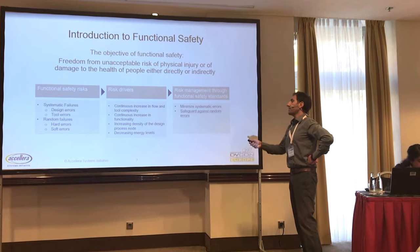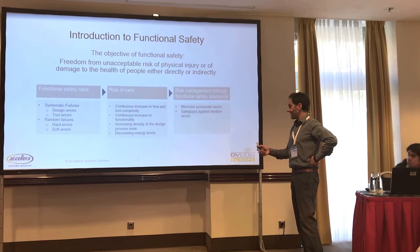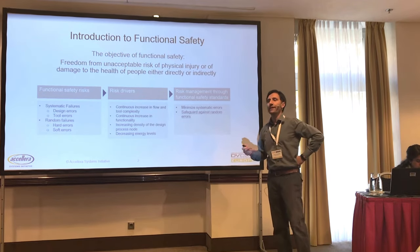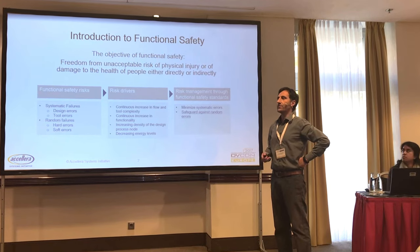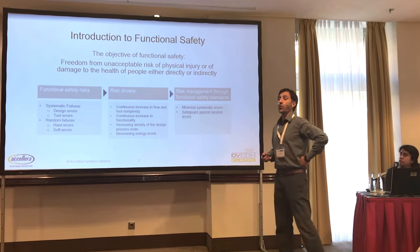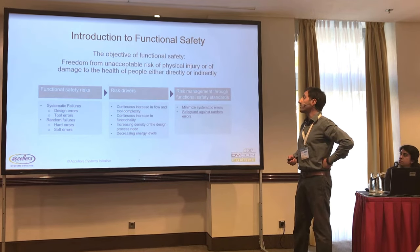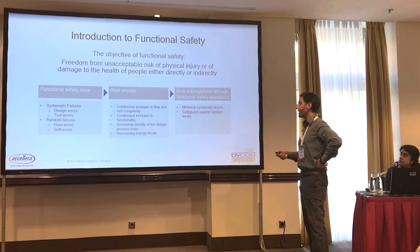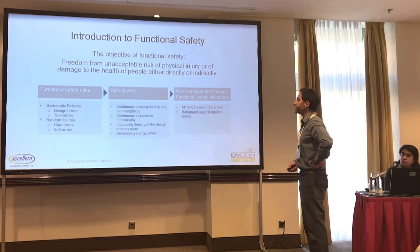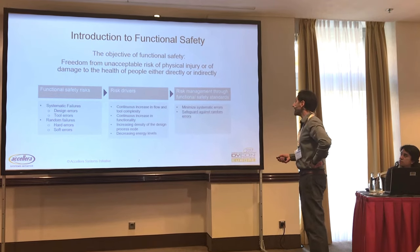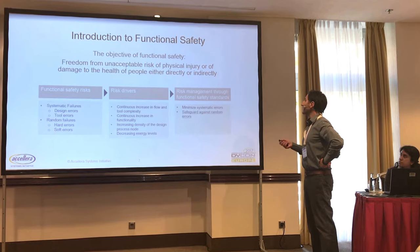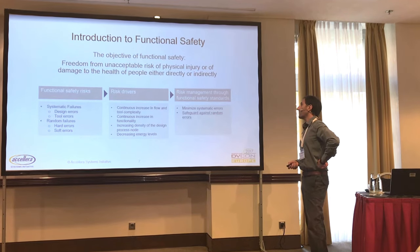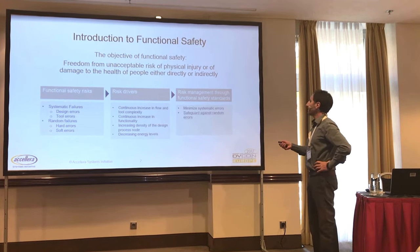The main ideas are that we have systematic and random failures. Systematic failures are typically traceable back to human errors, and random failures are due to physical events that occur in the field, like radiation or wear-out of the circuit. Risk drivers include the continuous increase in complexity, smaller geometries, and decreasing energy levels. We have risk management through functional safety standards, where we try to minimize systematic errors and safeguard against random errors.